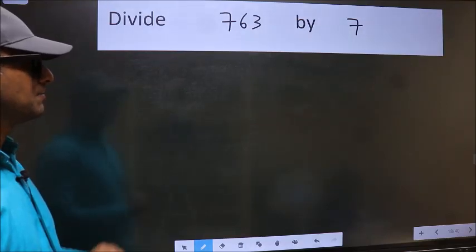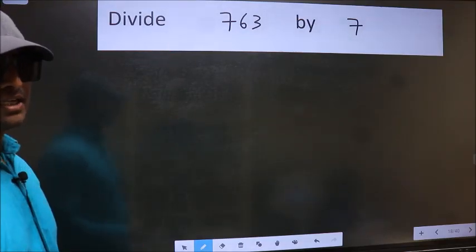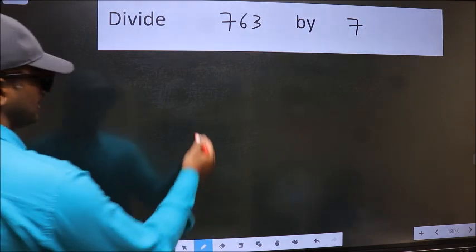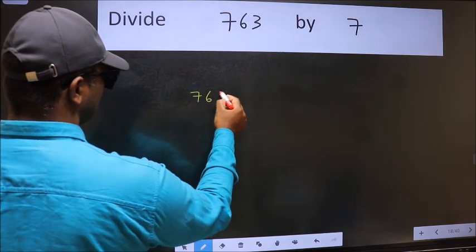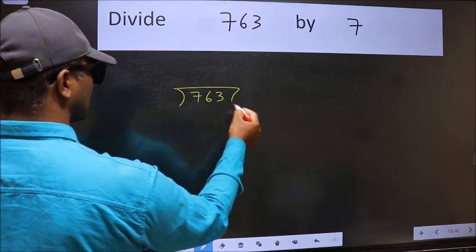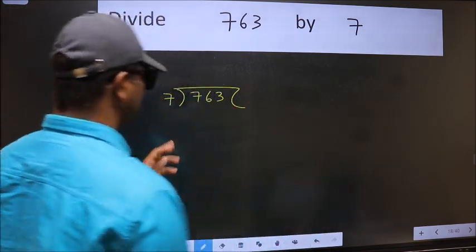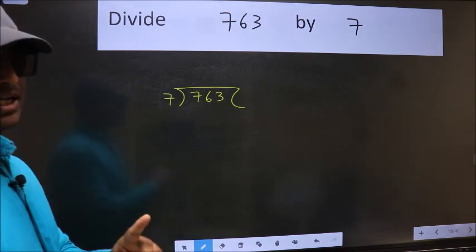Divide 763 by 7. To do this division, we should frame it in this way. 763 here and 7 here. This is your step 1.